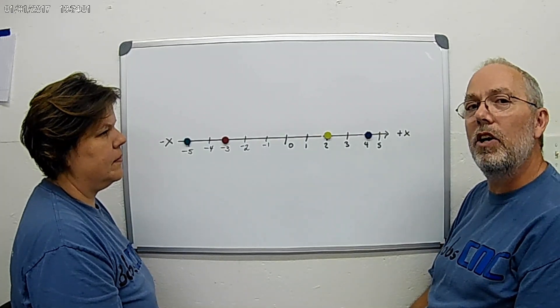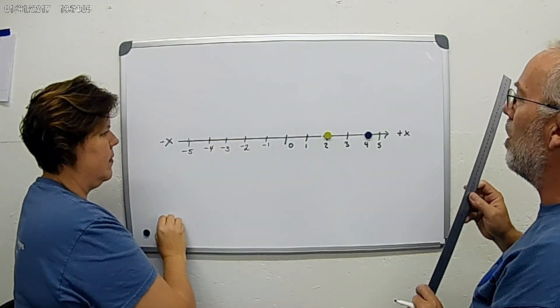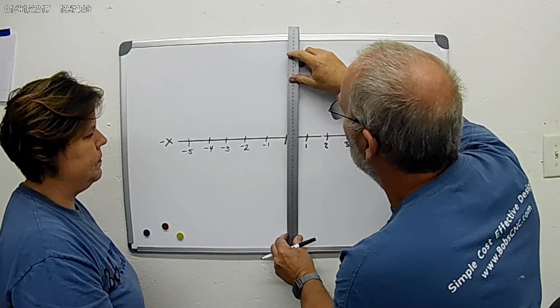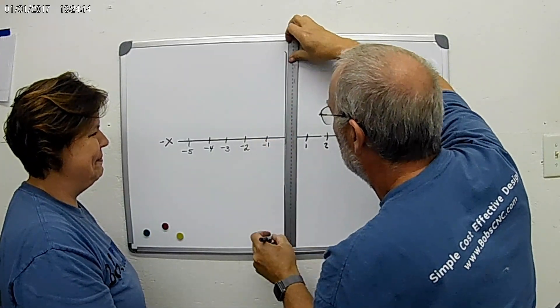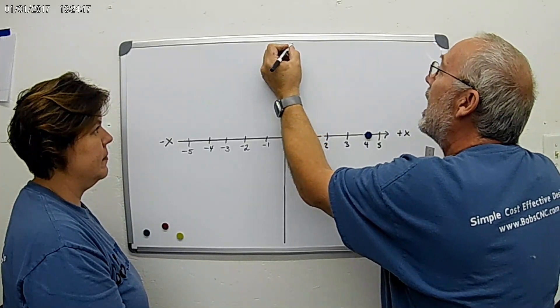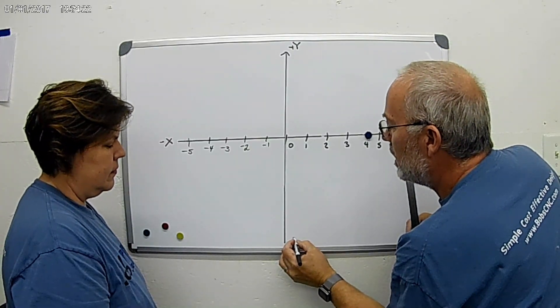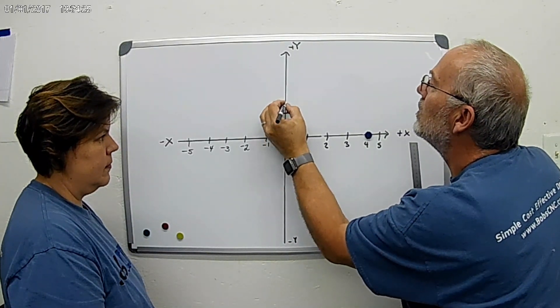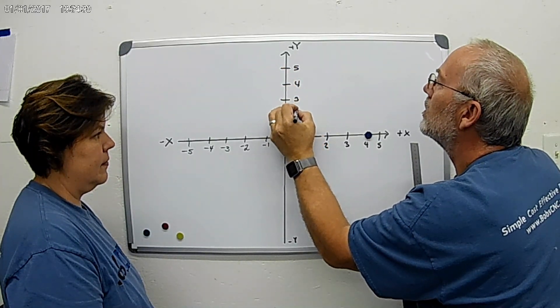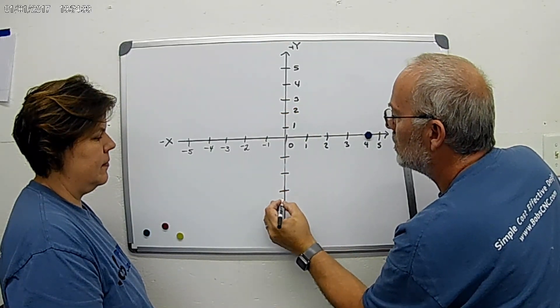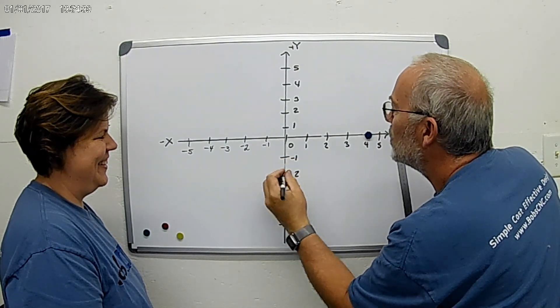And there you have it. So now we're going to go ahead and include the Y-axis, so let's go ahead and take those off and put a Y-axis up here. Now the Y-axis, the positive Y would be above the X-axis and the negative Y would be below.